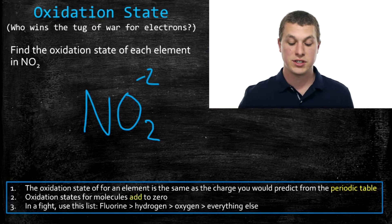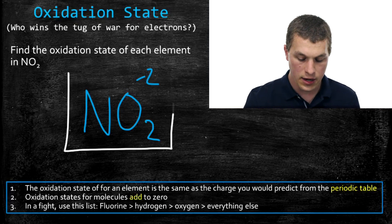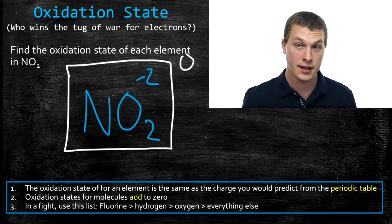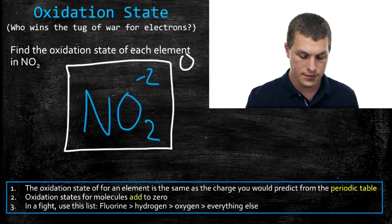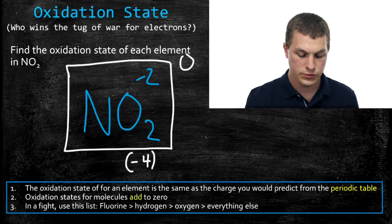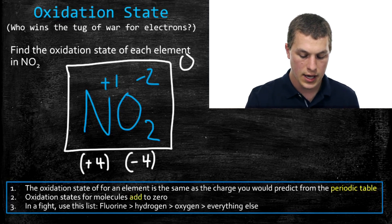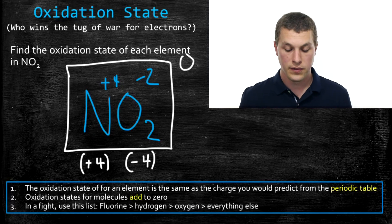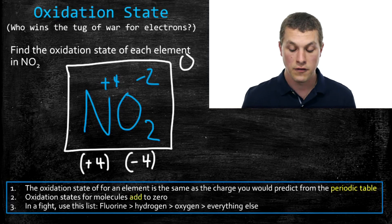So we assign oxygen a negative two oxidation state. With two oxygens, the total negative oxidation state is negative four, which means the total positive oxidation state must be plus four. Since there's only one nitrogen, nitrogen has an oxidation state of plus four. So for NO2: nitrogen has an oxidation state of plus four, and oxygen has an oxidation state of minus two.